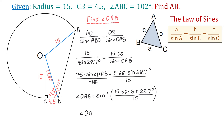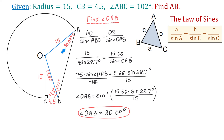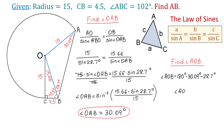Using a calculator, we find that angle OAB is approximately 30.09 degrees. Now, in our triangle, once we know these two angles, we can find the third angle by subtracting both from 180 degrees. So, angle AOB equals 180 degrees minus 30.09 degrees minus 28.7 degrees, which gives angle AOB equals 121.21 degrees.